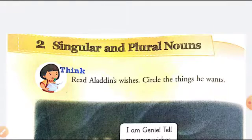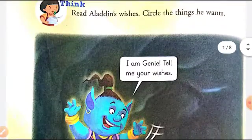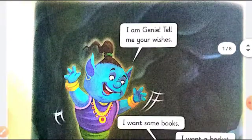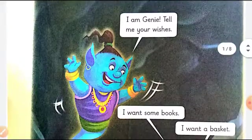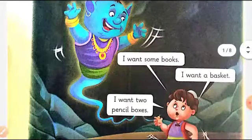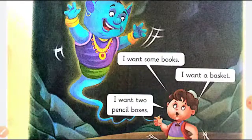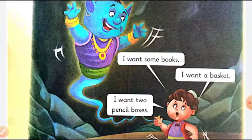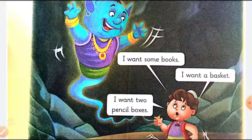Now, read Aladdin's wishes and circle the things he wants. See, in this picture children, Genie is asking 'I am a genie, tell me your wishes.' Now see what Aladdin is asking: 'I want some books, I want a basket, I want two pencil boxes.'